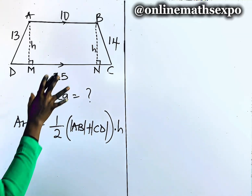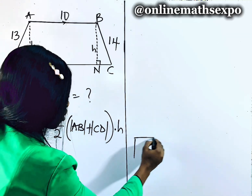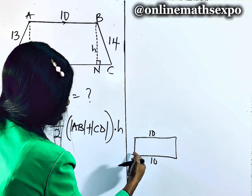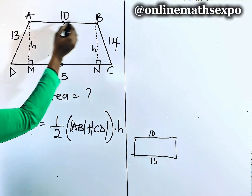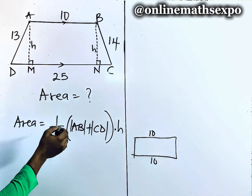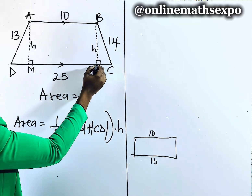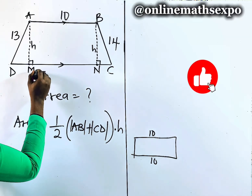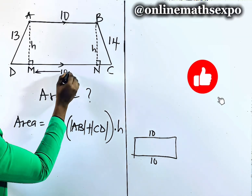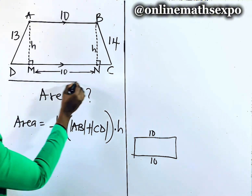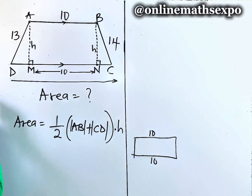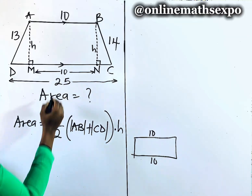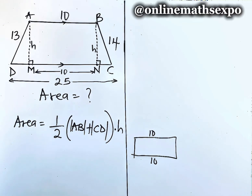For a rectangle, the opposite sides are equal. Since AB is 10, automatically MN is also 10 units. So from M to N is 10 units. But the total length CD is 25, so this bottom length is 25 units.